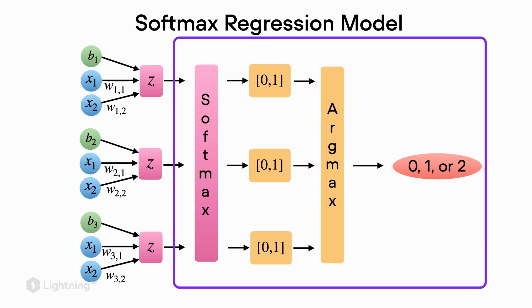The Softmax activation function is just like a generalized version of the logistic sigmoid function. It's a very similar concept, except now it combines the activations from multiple sets of weights.